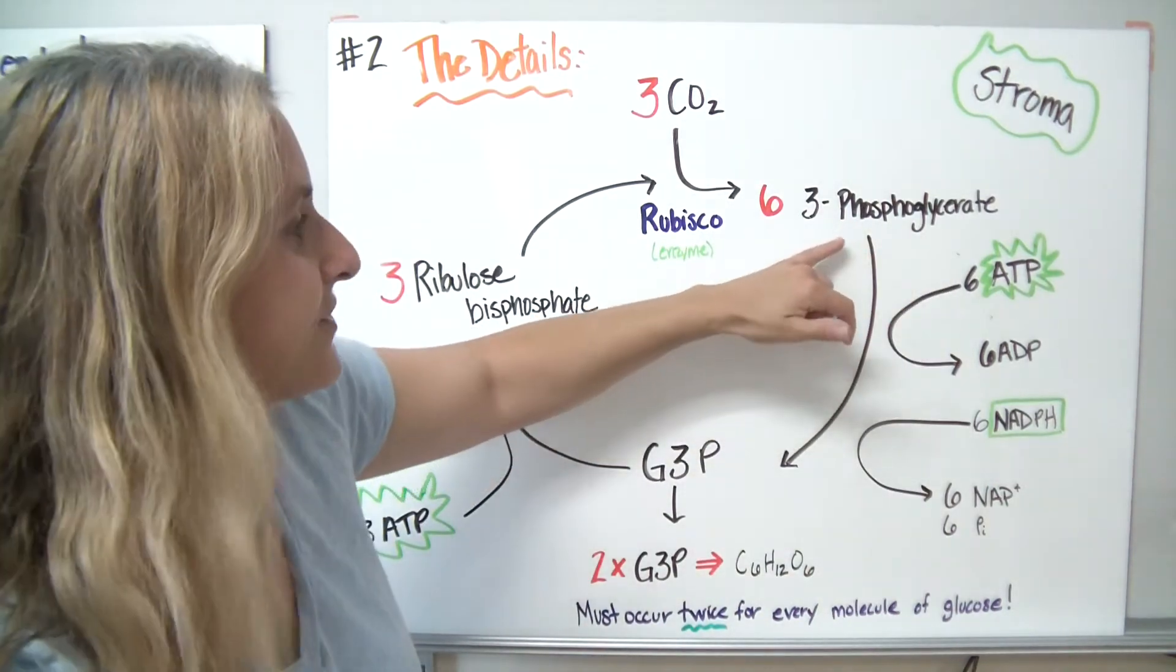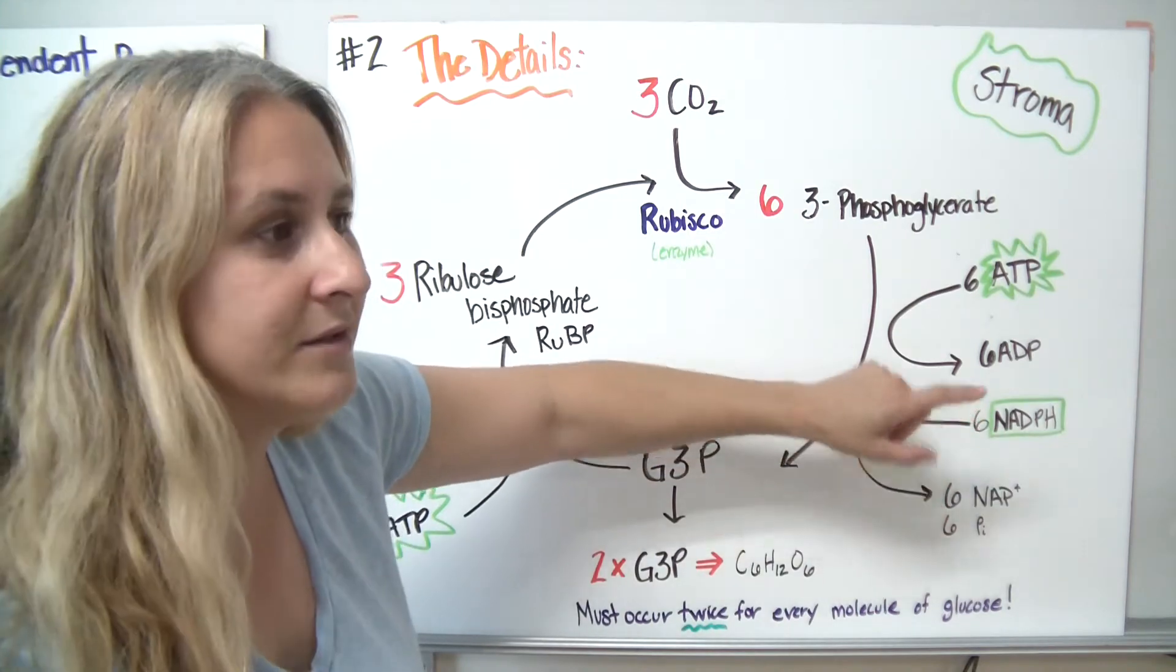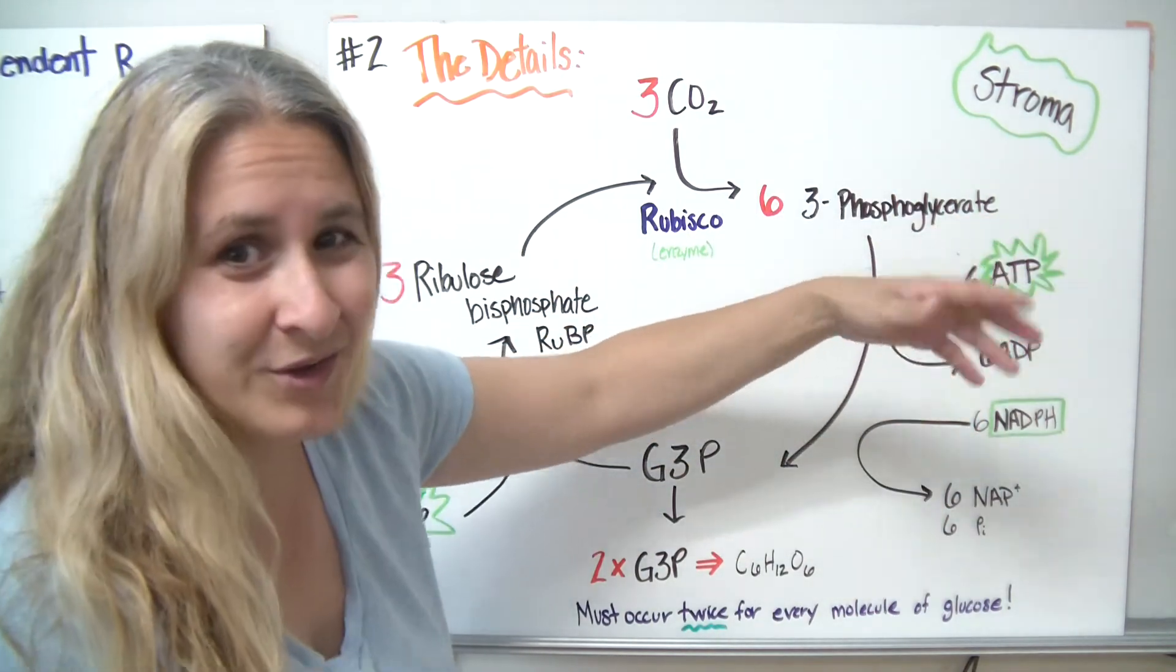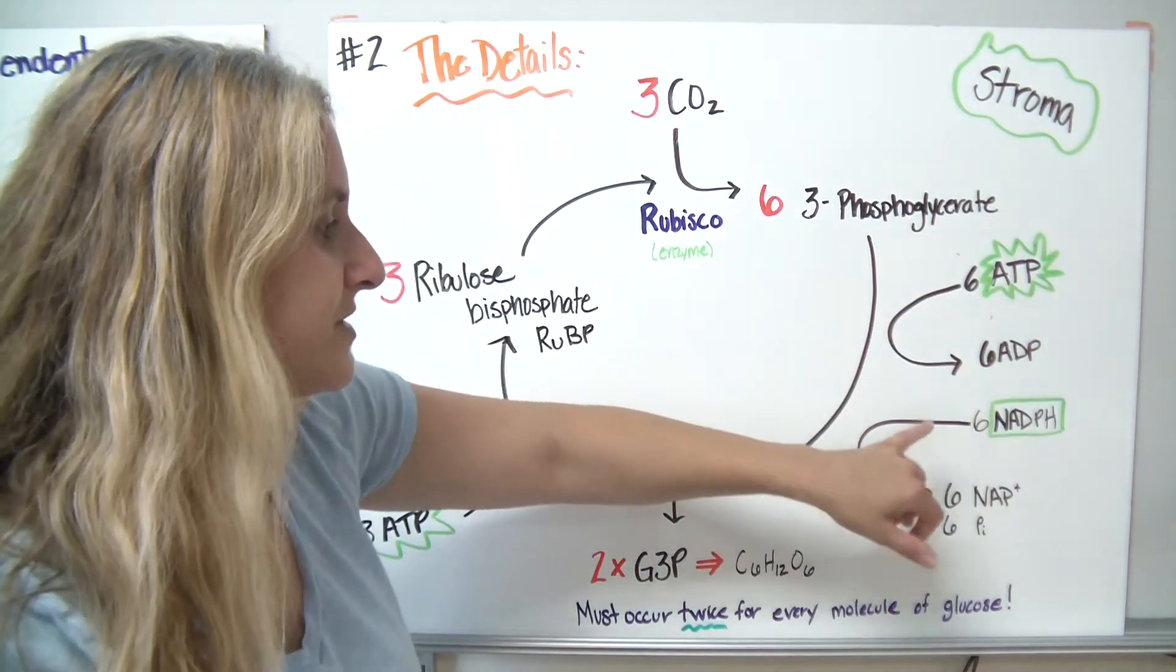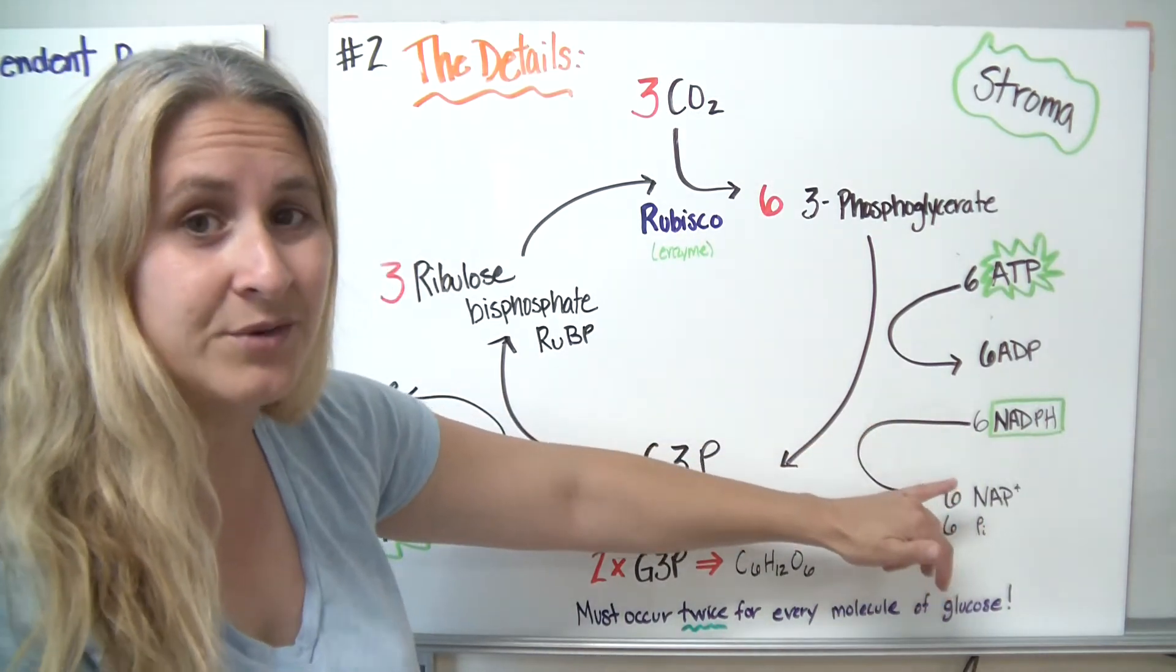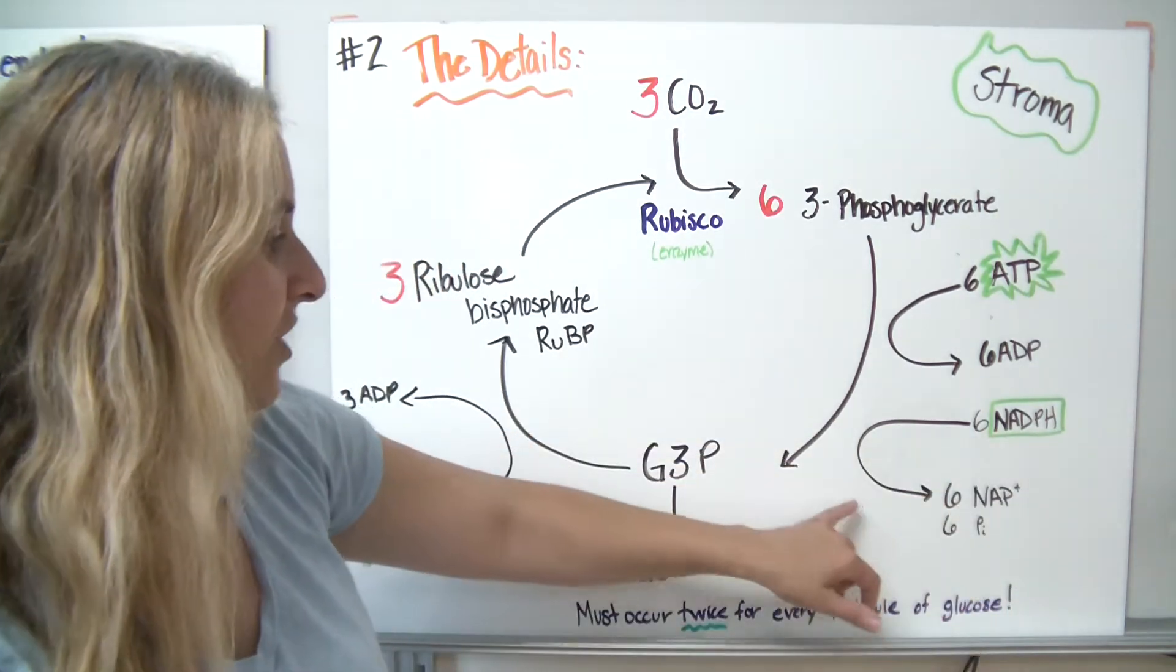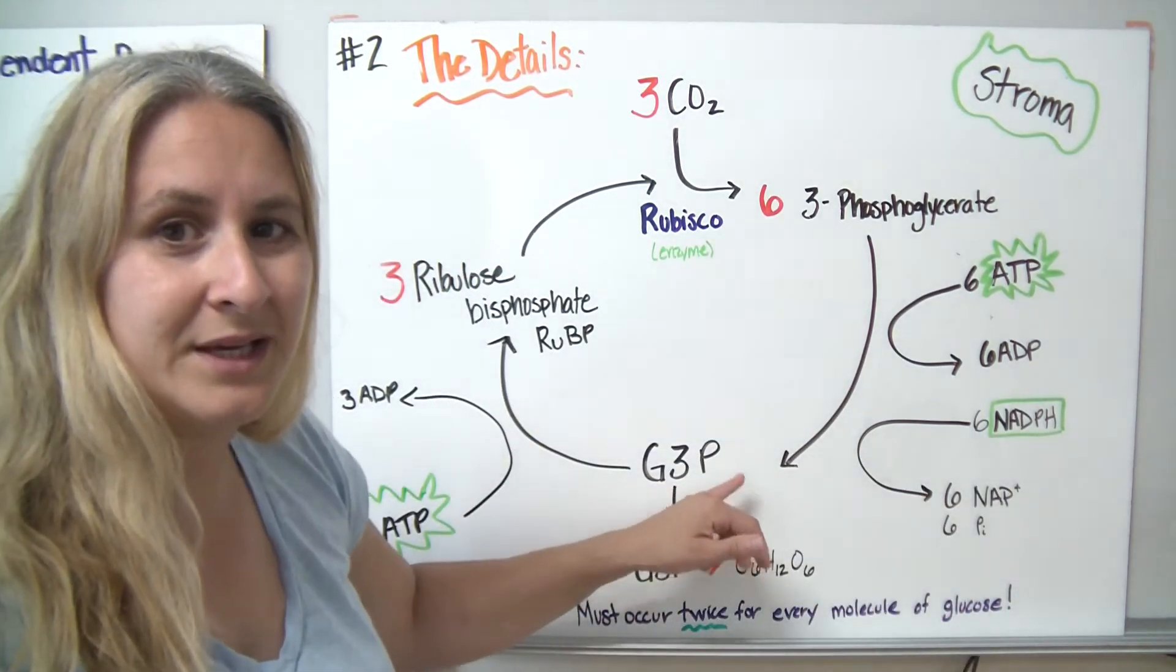Once we make the 3-phosphoglycerate, we're going to have to use six ATP from our light-dependent reactions, which remember we said the whole idea wasn't to make ATP because we're going to need them. Here's where we use them. We're also going to take those NADPH molecules from the light-dependent reactions and take those hydrogens off. That's going to help us make our G3P sugar.